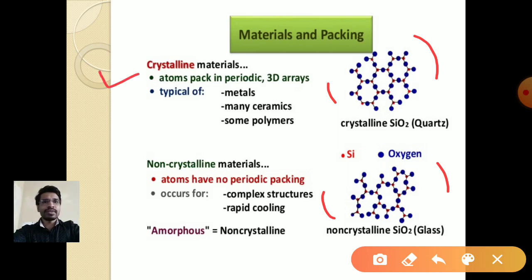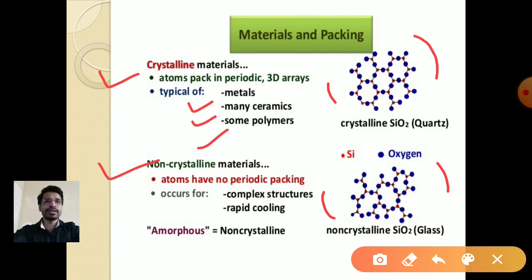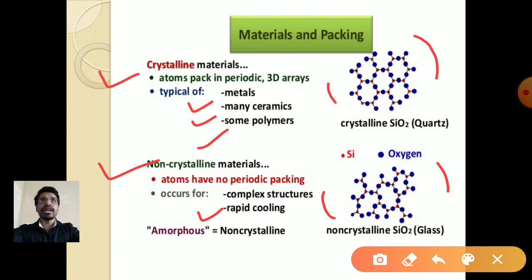In crystalline materials, atoms pack in periodic three-dimensional arrays. Examples are metals, ceramics, and some polymers. In non-crystalline materials, atoms have no periodic packing. Examples are glass and plastics. Non-crystalline structures occur because of complex structures and rapid cooling — when you cool the material from higher to lower temperature very rapidly, such a structure is formed. These are called amorphous or non-crystalline materials.